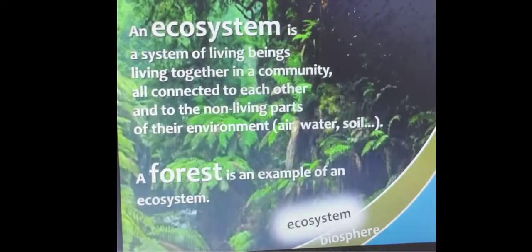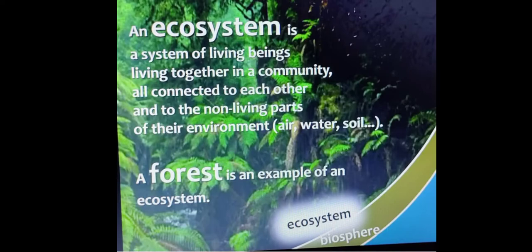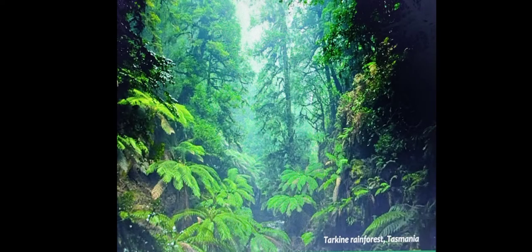An ecosystem is the summation of all types of lives — that can be plants, animals, bacteria, fungi — living together in a community, and all the non-living materials like air, water, soil, etc. An example of an ecosystem is a forest, where all the plants and animals along with non-living parts live together.